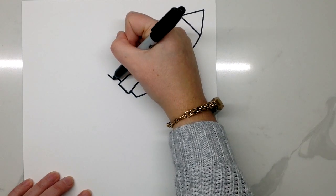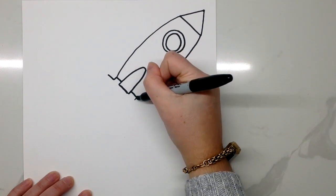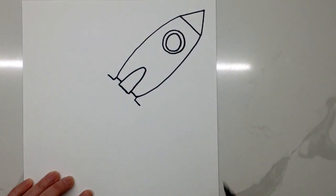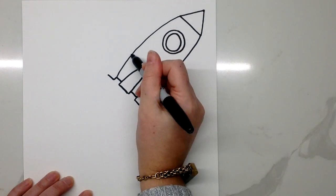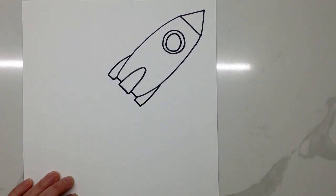On the sides of our rocket ship, we need to add on two more boosters. You can use the letter L and the number seven to get them started. Connect them to your rocket ship using curved or straight lines and they're going to kind of remind you of curvy triangles.